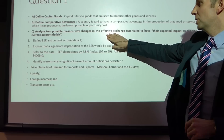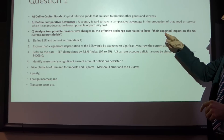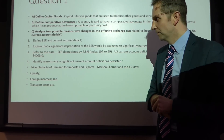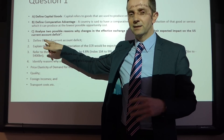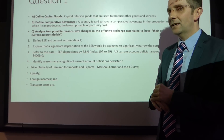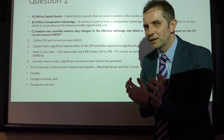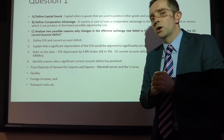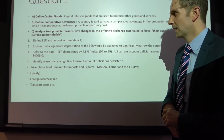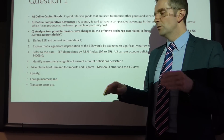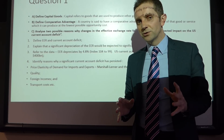Analyse two possible reasons why changes in the effective exchange rate fail to have — and this is lifted straight from your pre-release material — their expected impact on the US current account deficit. First, define the effective exchange rate index. Make sure you comment that this is not simply the US dollar measured against the Chinese yuan. It's a weighted index, weighted in terms of the countries the US trades most predominantly with, which have the greatest weights. Also define what we mean by the current account deficit — it's the value of imports greater than the value of exports.